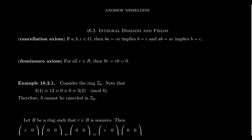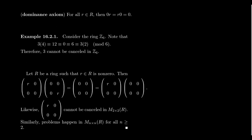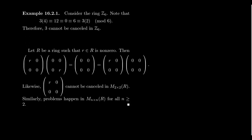But this idea of cancellation goes beyond just 0. Consider the ring of integers mod 6, Z₆. Take 3 × 4 = 12, which is congruent to 0 mod 6. But also 3 × 2 = 6, which is also congruent to 0 mod 6. When you look at those two equations, 3 × 4 and 3 × 2, you can't cancel the 3s because 4 doesn't equal 2 inside this ring. So the issue of cancellation goes beyond just the dominance of 0 — you can't cancel 3 in Z₆.